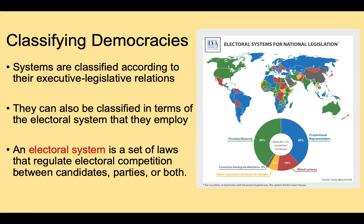An electoral system is a set of laws that regulate electoral competition between candidates, parties, or both. The electoral system has a lot to do with how we vote, how many votes we cast, how we cast them, how votes are counted, and then how eventually votes are translated into seats.